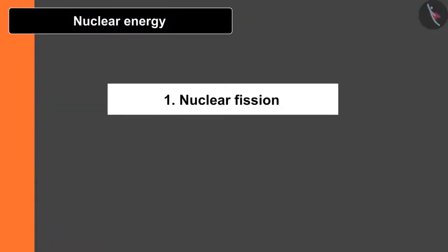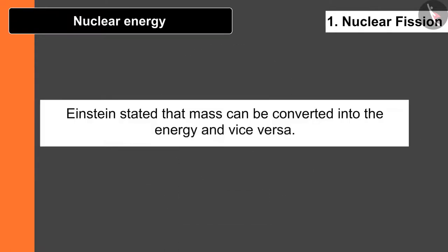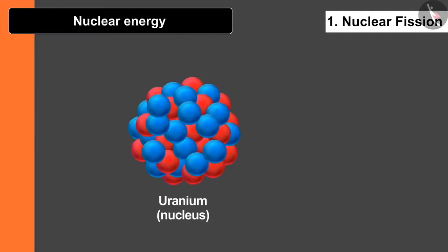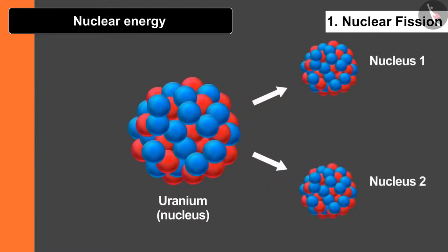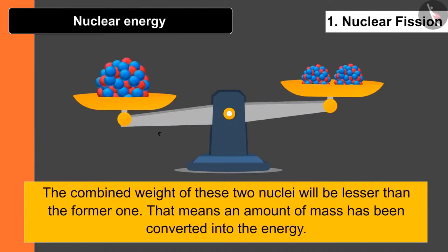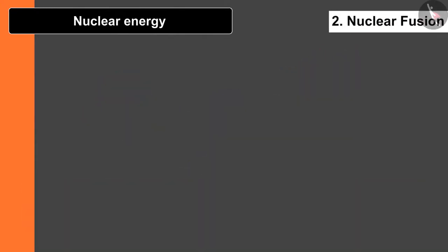The last source is nuclear energy, which is of two types: nuclear fission and nuclear fusion. To understand this, consider Einstein's equation E = mc². Einstein stated that mass can be converted into energy and vice versa. In nuclear fission, a heavier nucleus such as uranium — being unstable — is bombarded with a low-energy neutron to stabilize it, producing two stable nuclei and releasing a huge amount of energy. The combined weight of the two resulting nuclei is less than the original, meaning some mass has been converted into energy.